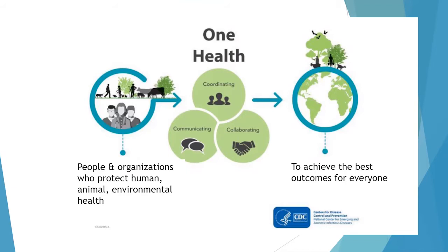One Health is the intersection between human, animal, and environmental health, with the understanding that these three are inextricably linked and need to be considered together as a whole in order to make meaningful changes. We do this by identifying the people and organizations who protect human, animal, and environmental health, and then helping them to work together through coordination, communication, and collaboration so that they can come up with solutions to really difficult problems that achieve the best health outcomes for everyone.